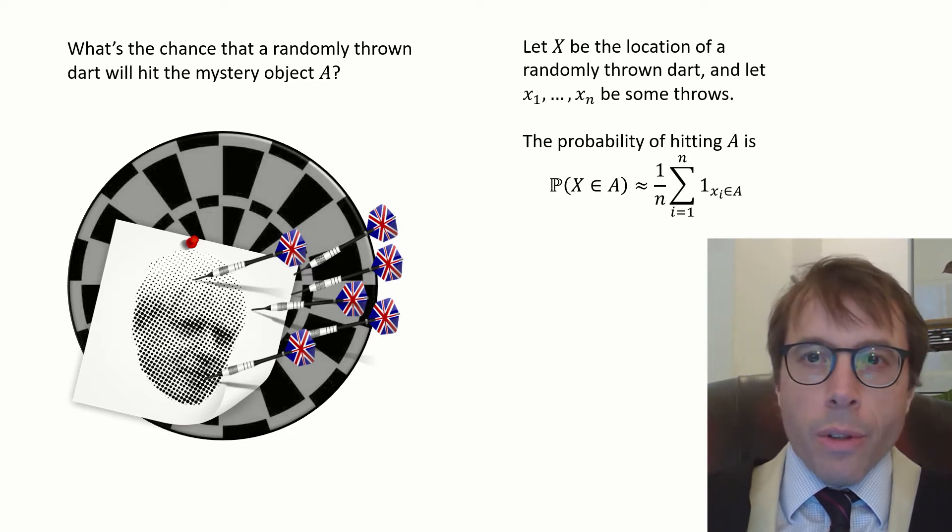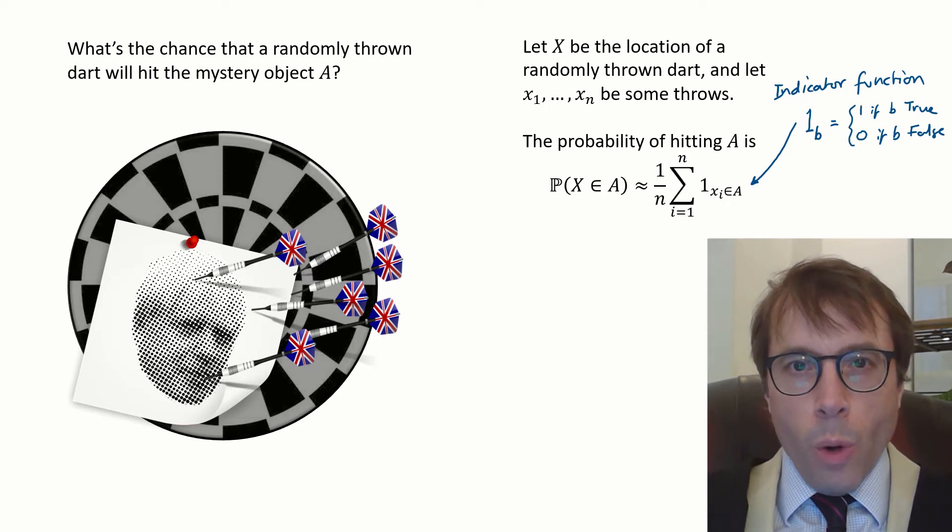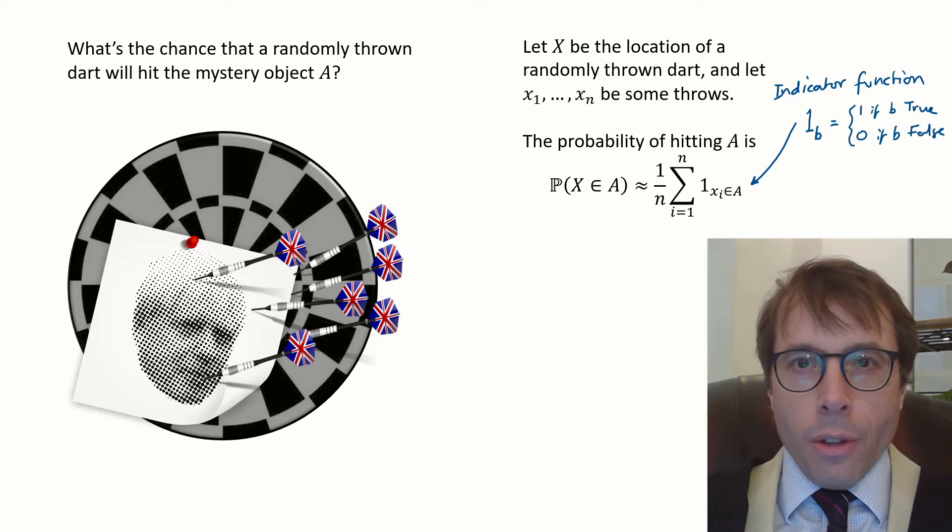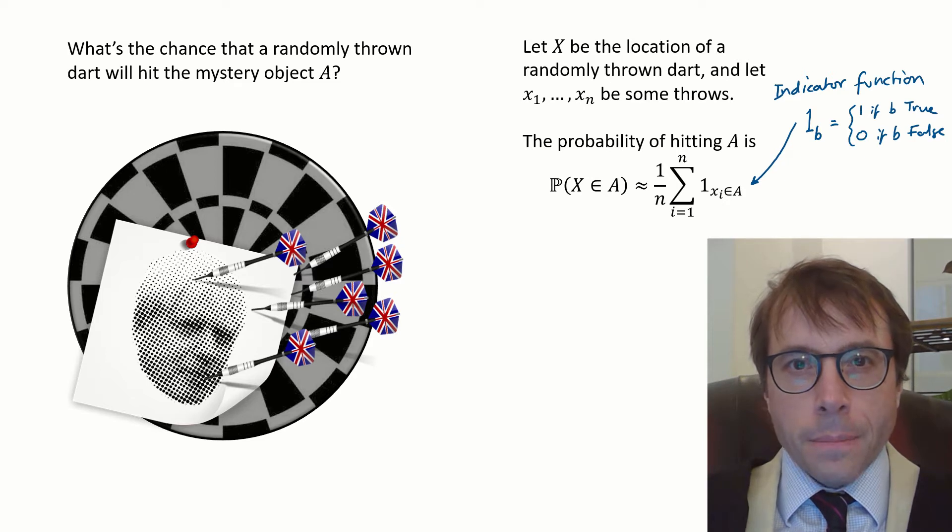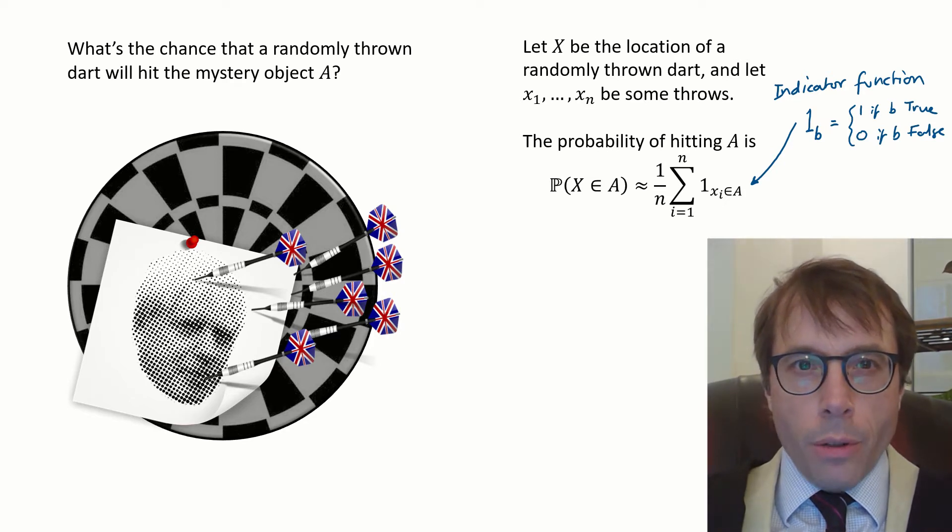Here I've written it with indicator function notation. 1 sub xᵢ in A is equal to 1 if xᵢ is in A and 0 if xᵢ is not in A. So this expression on the right just counts up the number of darts that hit A.